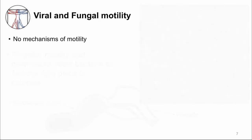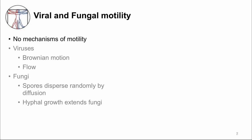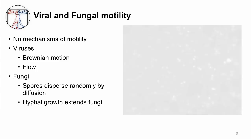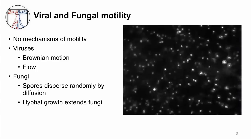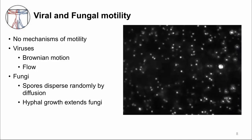In contrast to bacteria, neither viruses nor pathogenic fungi can move on their own. Yet they are still very good at establishing infection. Viruses and fungi can reach their preferred sites of infection by random diffusion called Brownian motion and by the flow of body fluids.